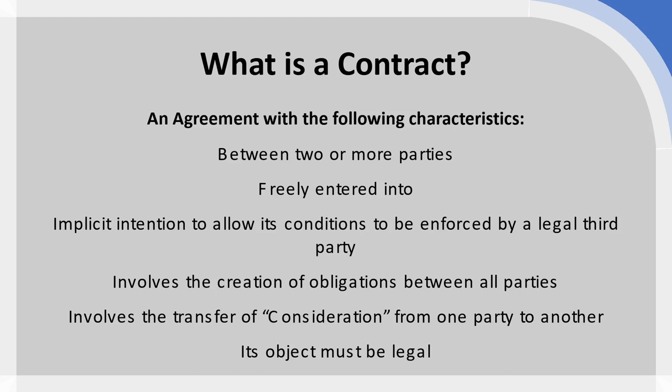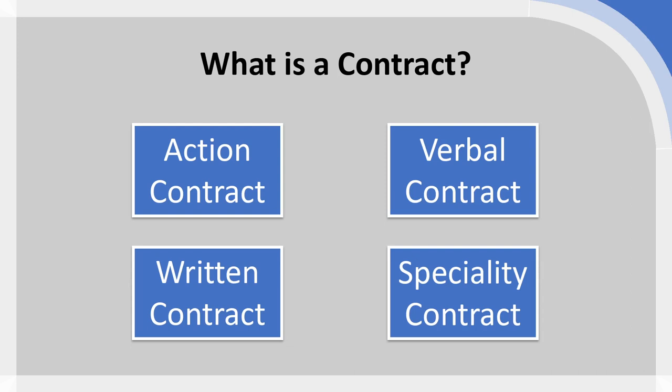Moving on to the different forms a contract can take — this is very much within English common law, and different jurisdictions may have different forms. The first is not immediately obvious: action contracts are valid and legally binding under English common law. This is a contract where there may not be a verbal or written agreement, but there is an action taken which signifies in a clear and unequivocal manner the intention to offer and accept an agreement.